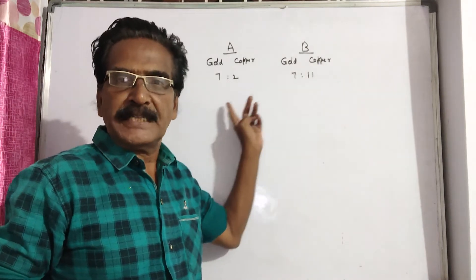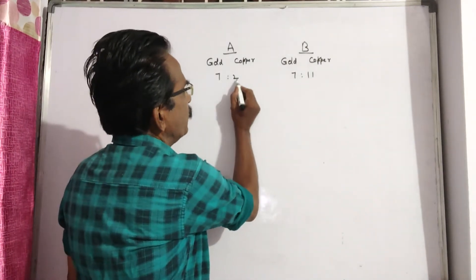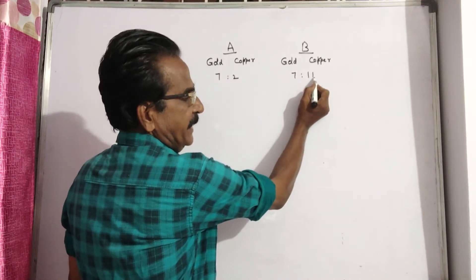Friends, here the equal quantities of alloys are taken. Here 7 plus 2 is 9, 7 plus 11 is 18.